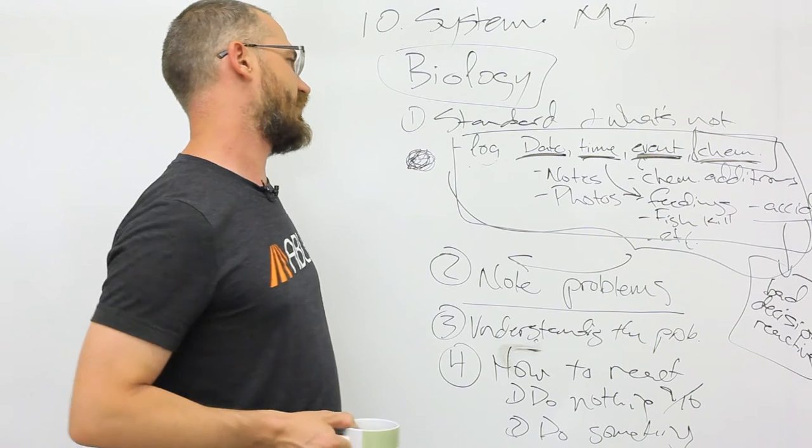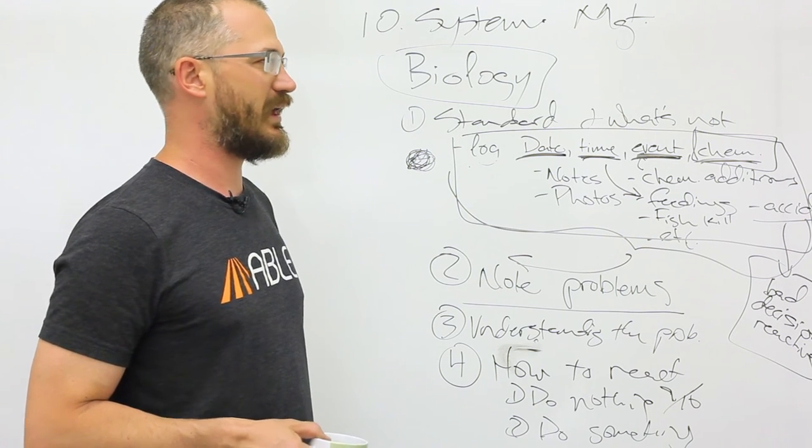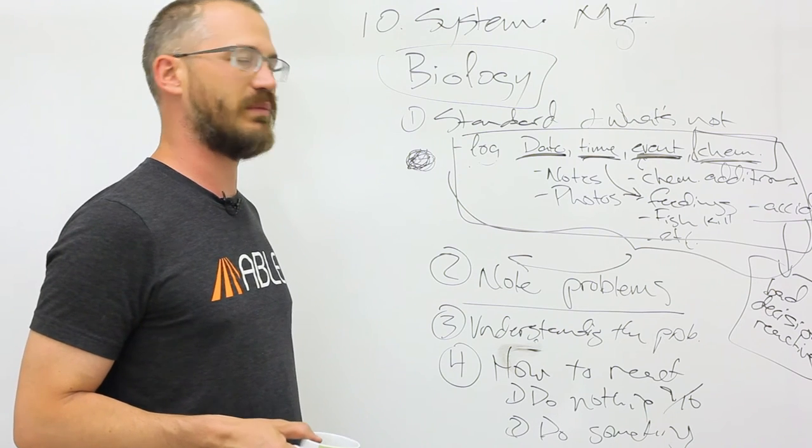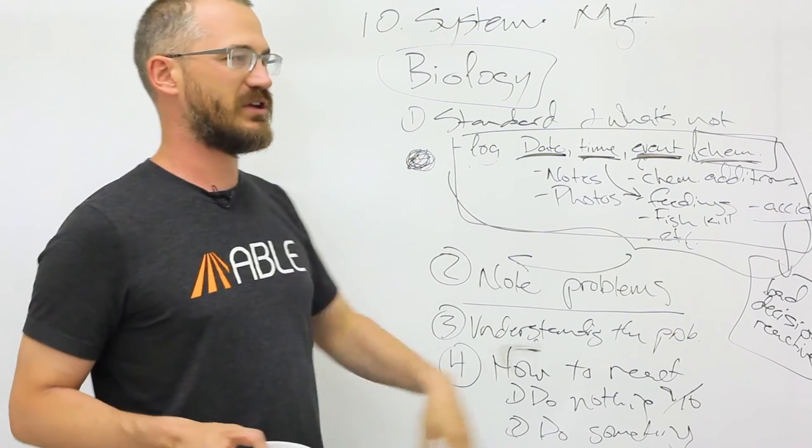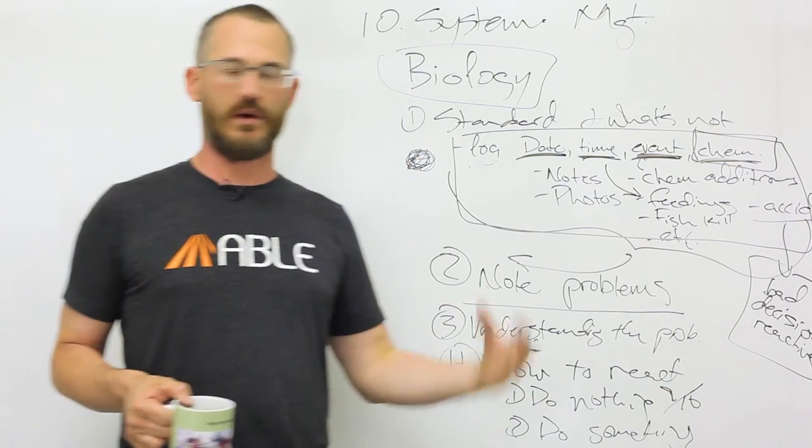There are some exceptions where big system changes can be good, but they are rare. By and large, if you screw something up, make a mistake, the biology has the ability to recover or work itself out.